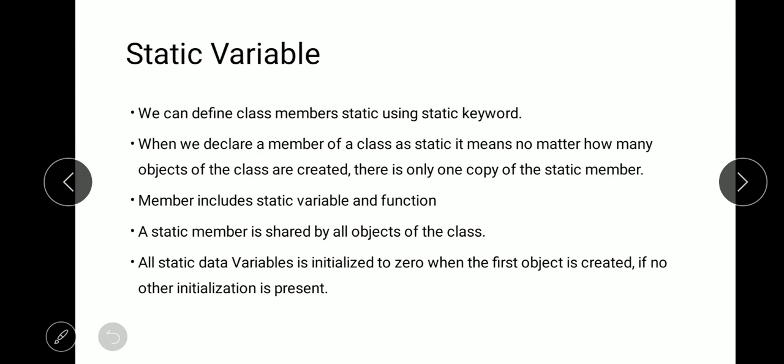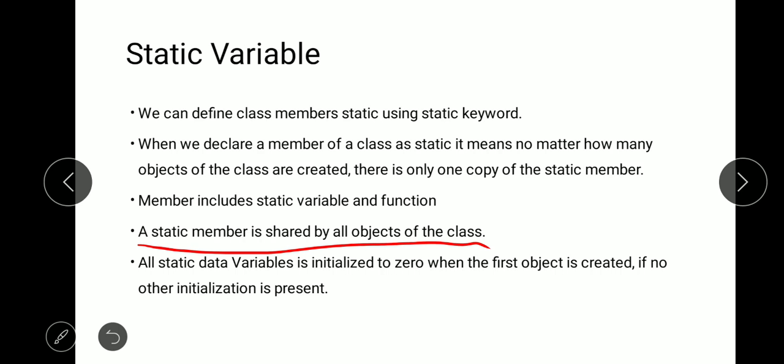So what is the use of a static variable? Whenever we declare any particular variable as static, then throughout the program only one copy of that variable is used. Inside object oriented programming, whenever we declare a member — which includes variables as well as functions inside the class — as static, then no matter how many objects we create, only one copy of that static variable is shared between the multiple objects.